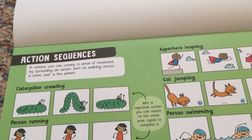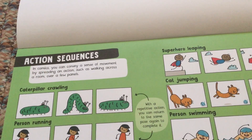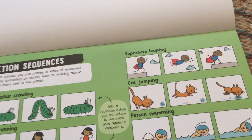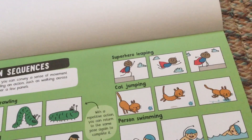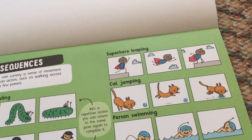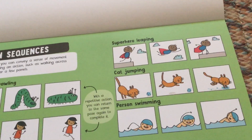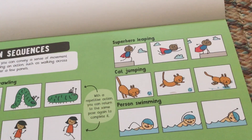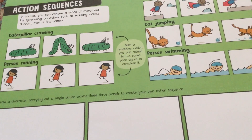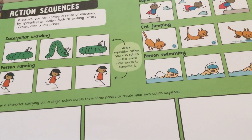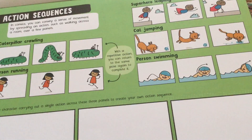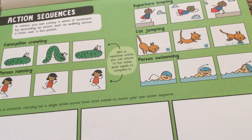Other examples include a superhero leaping, a cat jumping, or a person swimming. Now try it yourself — draw a character carrying out a single action across three panels to create your own action sequence.